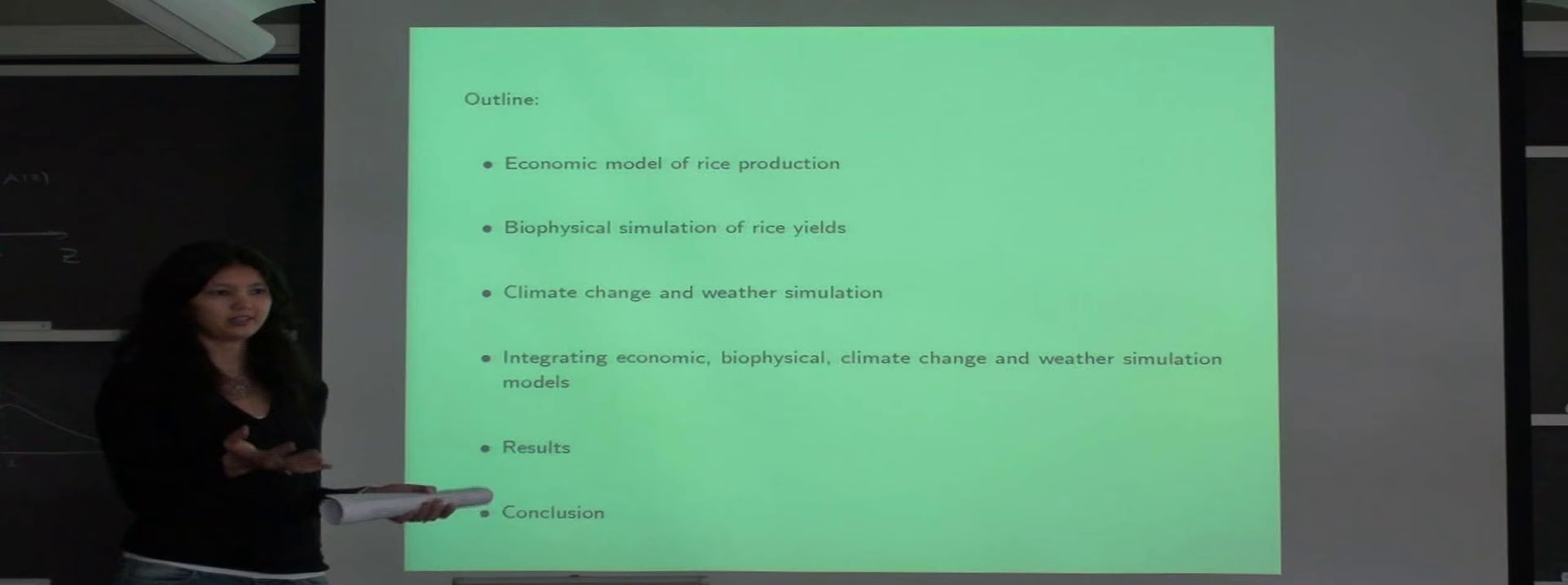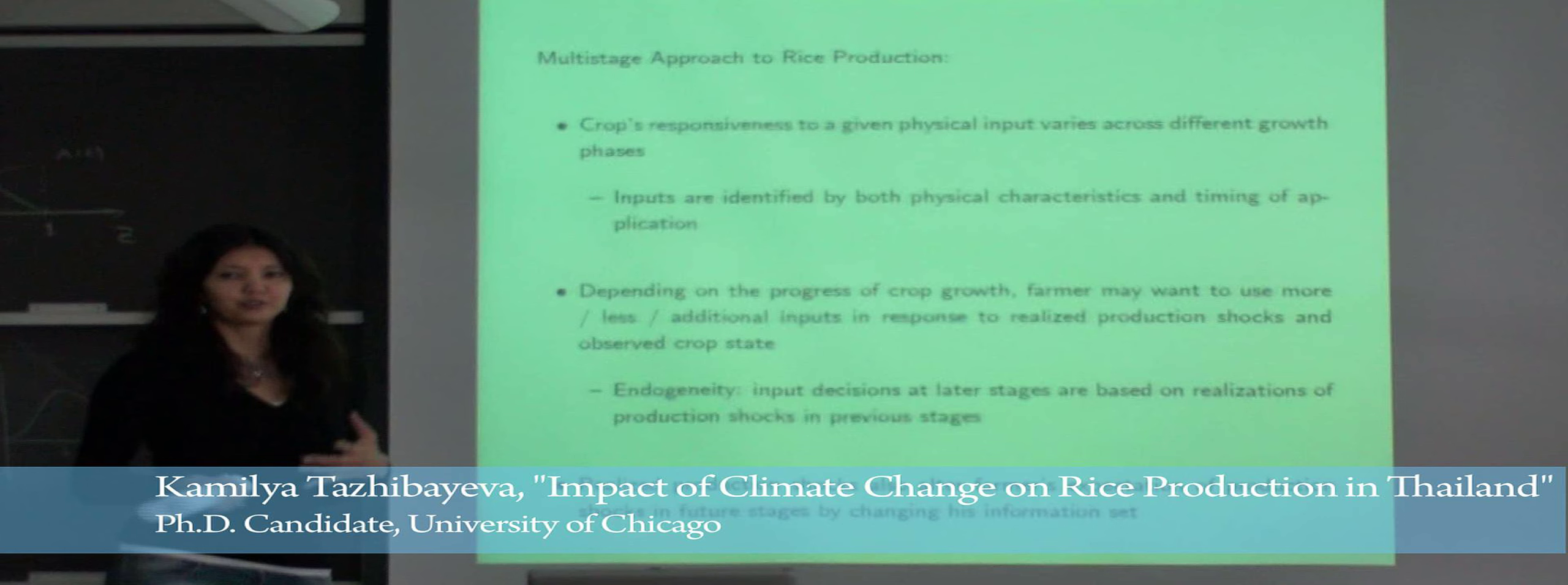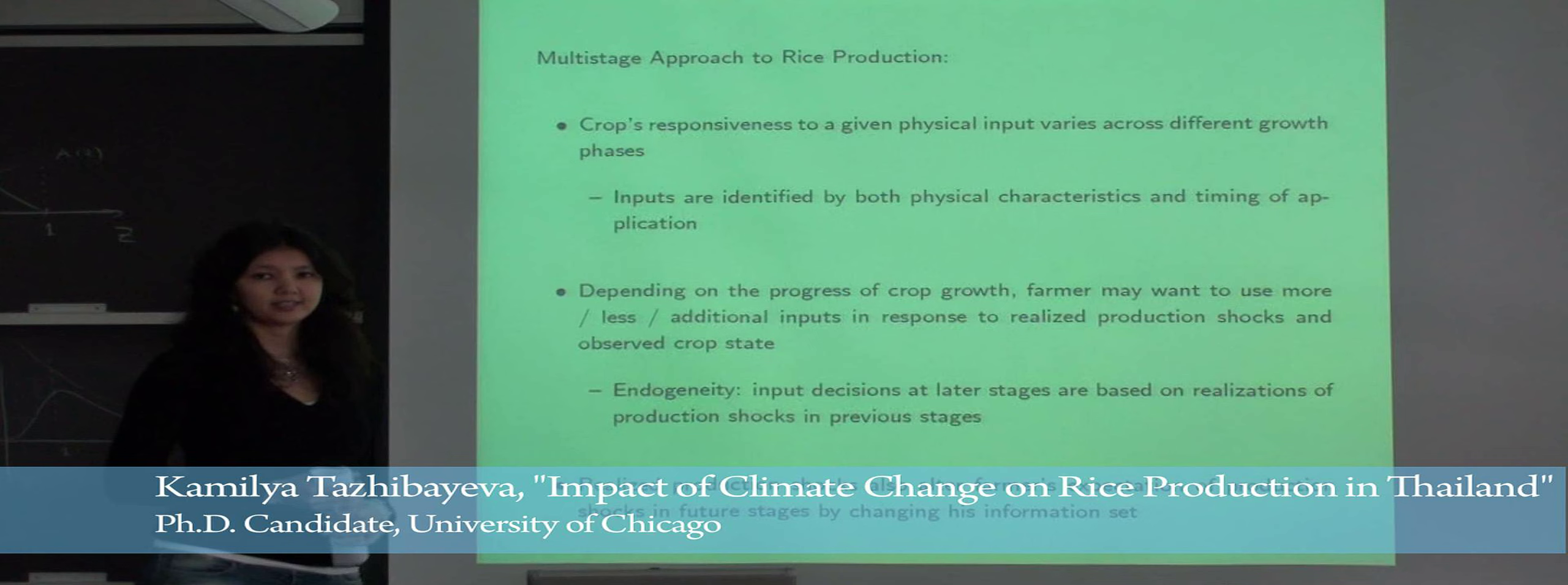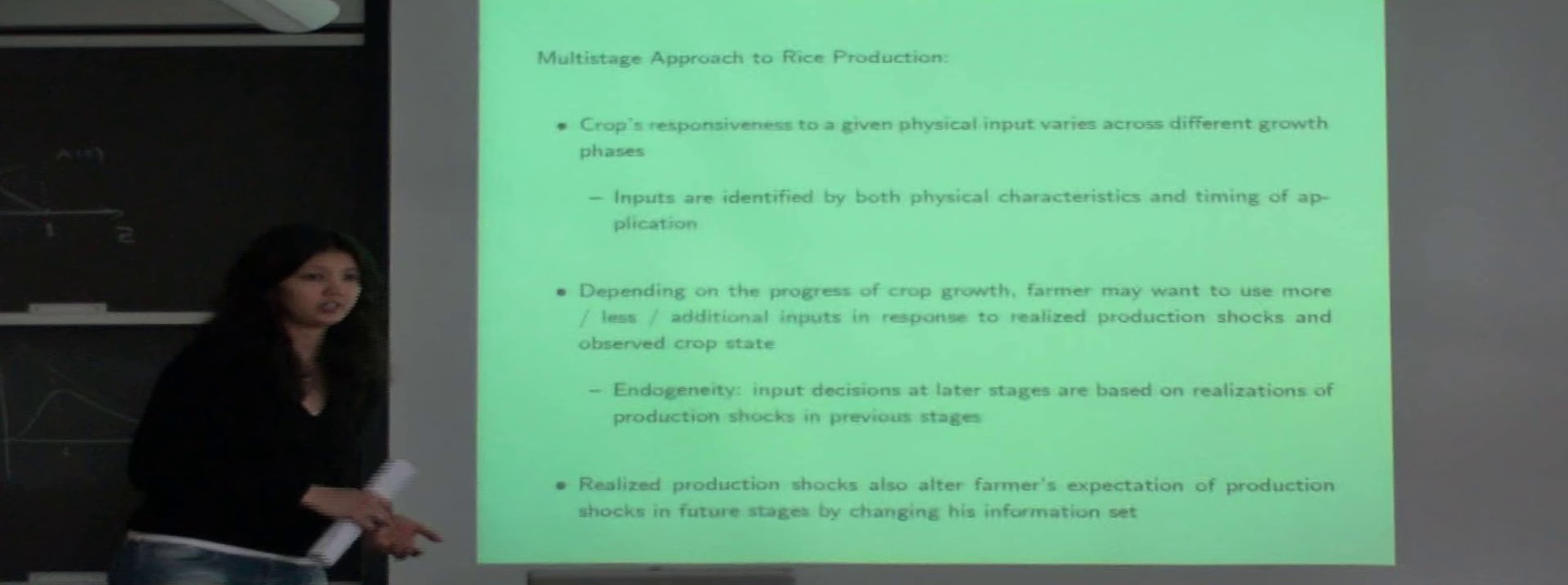In our paper we combine four different models from several disciplines to get at the effect of climate change. We take a multi-stage approach to modeling rice production. In general there are several reasons why single-stage production functions are ill-suited for modeling crop cultivation.